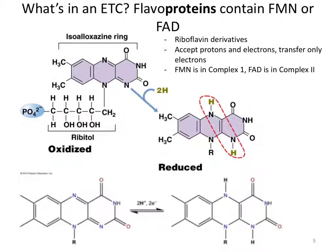Flavoproteins contain flavin mononucleotide (FMN) and flavin adenine dinucleotide (FAD), which are also found in electron transport chains — for example, in Complex 1. Both FMN and FAD are prosthetic groups and vitamin derivatives, specifically derivatives of riboflavin. They accept protons and electrons, but transfer only electrons. FMN is associated with a flavoprotein in Complex 1, and FAD is associated with a flavoprotein in Complex 2.